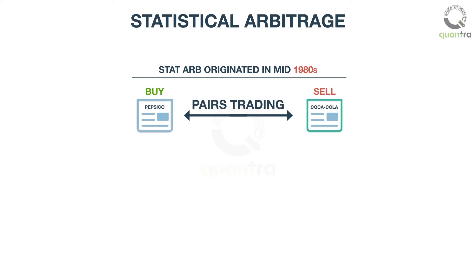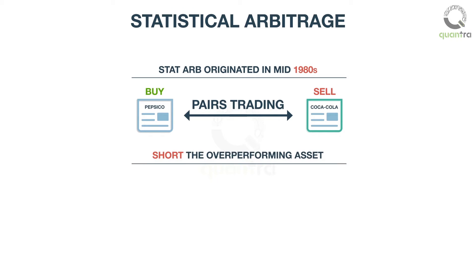By the early 1990s, analysis techniques became more sophisticated and models deployed were more tech-savvy. This is when the term statistical arbitrage was first used. Stat-Arb suggests taking positions against the general norms of the market: short the over-performing asset, go long the under-performing one.